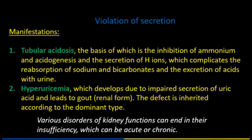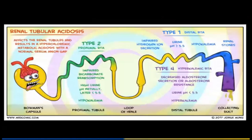Regarding violation of secretion, manifestations include tubular acidosis and hyperuricemia. Various disorders of kidney function can end in insufficiency, which can be acute or chronic. In renal tubular acidosis, the variants involve Bowman's capsule, proximal tubule, loop of Henle type 4, with hypercalemia and collecting duct involvement — as a result, renal stones may present.